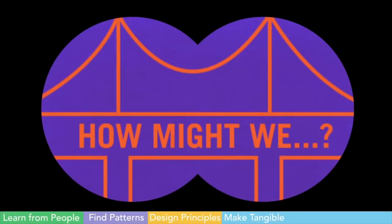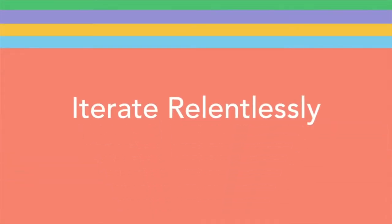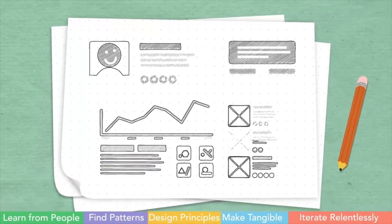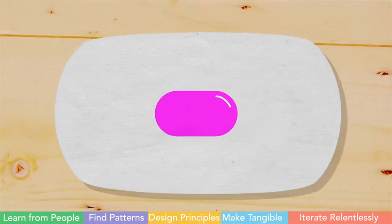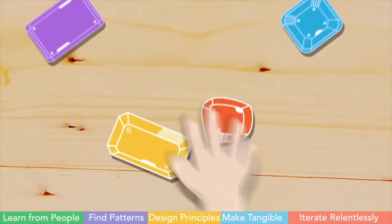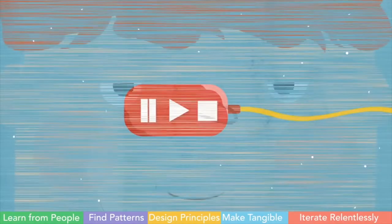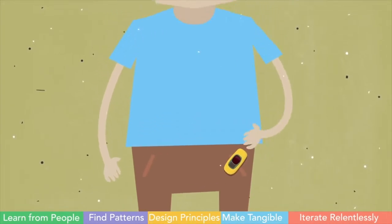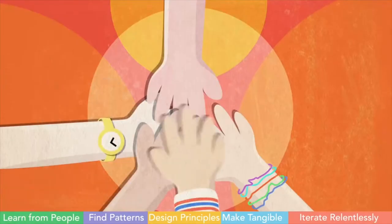Make tangible: they asked 'how might we' questions to bridge the gap from design principles to specific ideas, then quickly turned the best of them into rough prototypes. Iterate relentlessly: building physical devices out of simple cardboard and mocking up digital experiences with paper and pencil allowed them to learn quickly. With each prototype they tweaked and evolved the concept, bringing digital and physical models to kids to listen and learn, until they arrived at a compelling solution — a new product category. Before Fitbit and Apple Watch, they developed an activity tracker giving kids a portal to an online world where they could share and celebrate their real-world accomplishments with each other and their families.